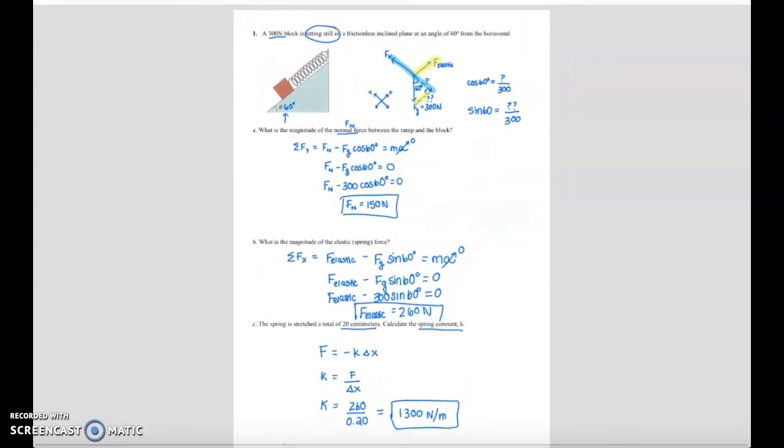This problem again focused on a ramp. We started by doing our free body diagram, remembering that we needed to tilt our axes and split up the force due to gravity into components. We then use the sum of the forces equals ma in both directions to solve for unknowns. And part C was a little reminder of Hooke's Law.